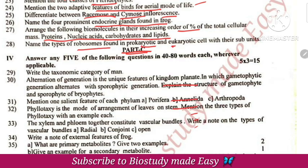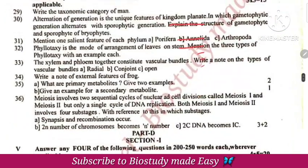Ribosomes are found in both prokaryotes and eukaryotes. In prokaryotes, ribosomes are 70S, made up of 50S and 30S subunits. In eukaryotes, ribosomes are 80S, made up of 60S plus 40S subunits.